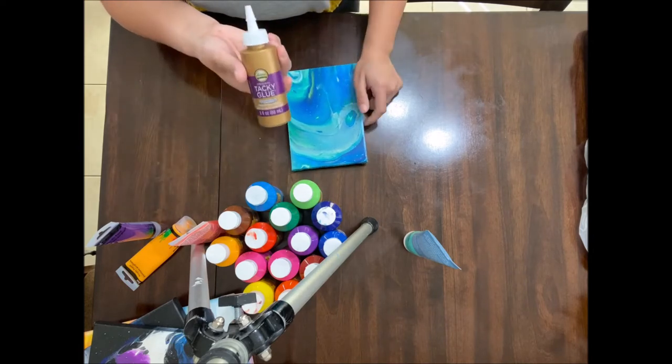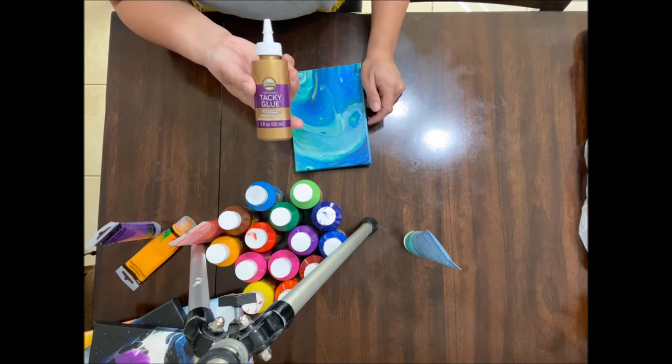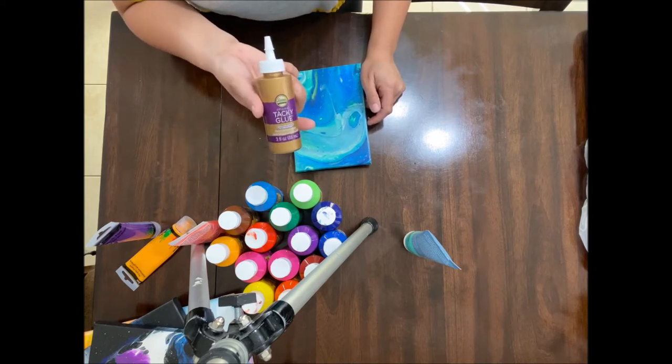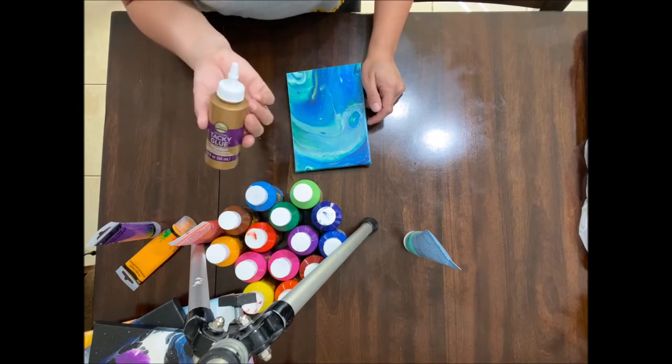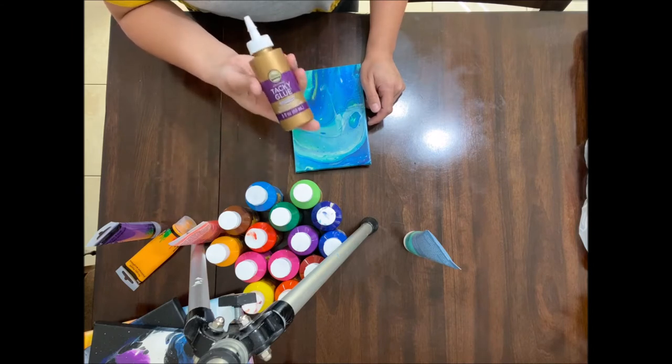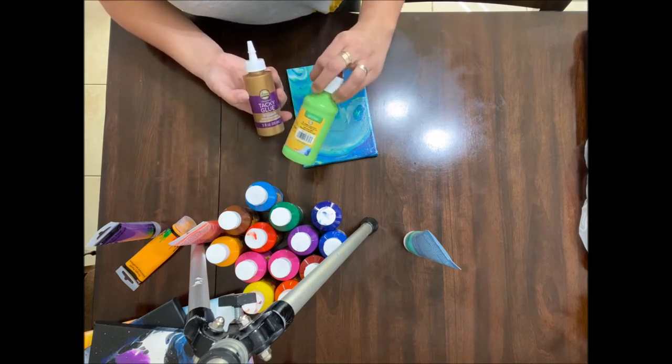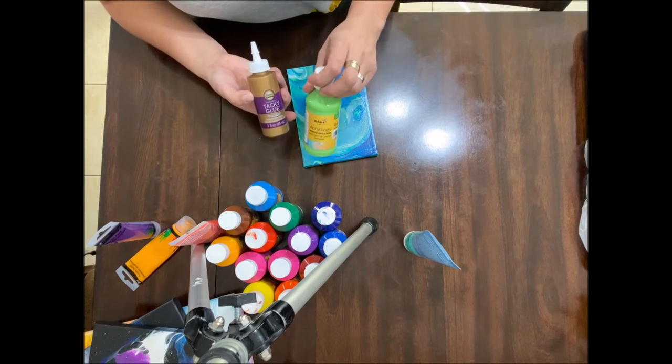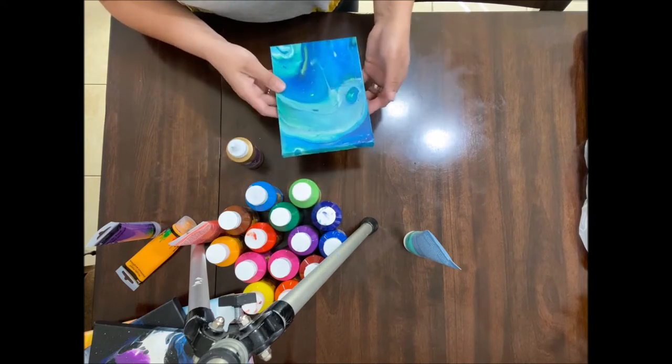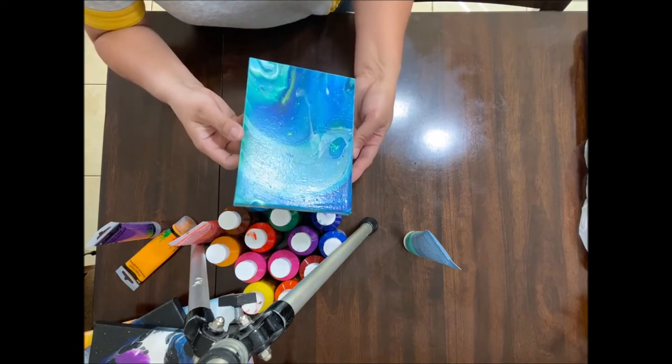You can use the tacky glue from Aleene's and just mix 60% of this with 40% of water. You mix that really well, shake it, and that will be your pouring medium. Then you use that to mix with your paints to make them more fluid. Then you just pour it on your canvas, let it dry, and you will have this nice shiny finish.